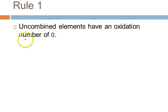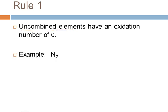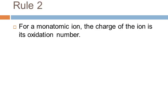Rule number one says that uncombined elements — anything in its elemental state — has an oxidation number of zero. For example, nitrogen gas is not combined with anything; it's an element, so its oxidation number is zero. Similarly, magnesium metal has an oxidation number of zero. It's that easy.